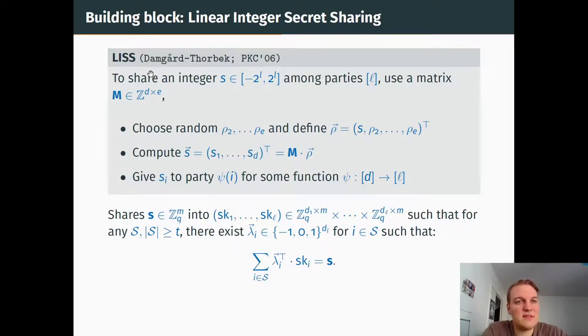More formally, it is the given of a matrix M, parameters D and E, and a surjective map Psi from D to the set of servers, such that when I want to share an integer, I choose random elements and complete S into a vector of size E, multiply it on the left with M to get another vector of size D, of length D, and each coordinate of S I give to party Psi of I thanks to my map Psi. This can be very quickly generalized to the sharing of vector S instead of just an integer S, and we share it into matrices which have different sizes depending on the number of rows given by Psi to server I.